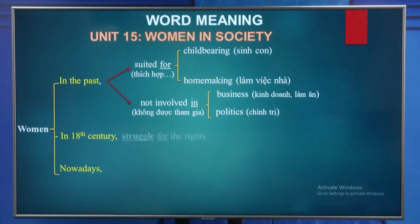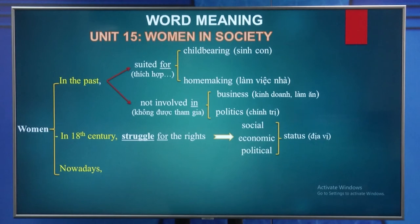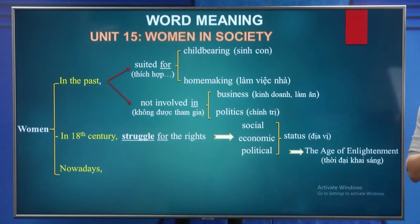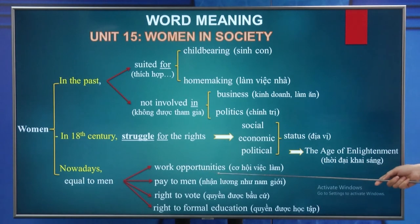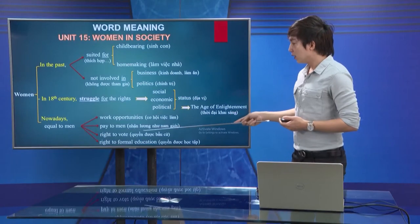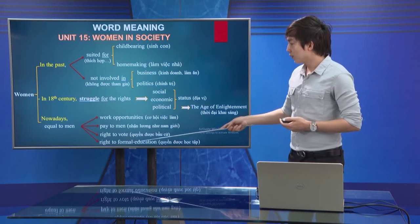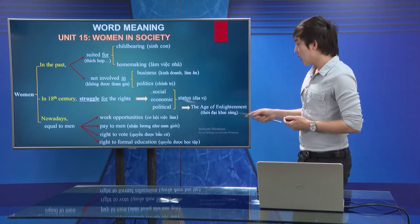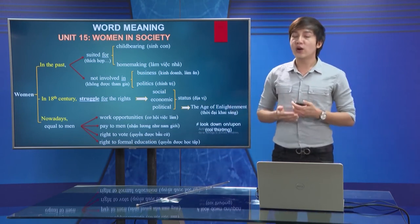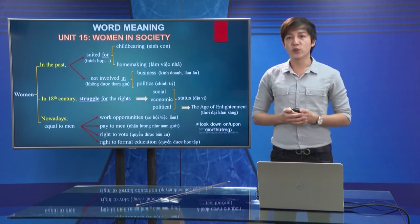However, in the 18th century, women had a struggle for their rights about social status, economic status, and political status. This time is called the Age of Enlightenment. Nowadays, women are equal to men in many aspects of life, including work opportunities, equal pay to men, right to vote, and right to formal education. Sometimes women were still looked down on by men.